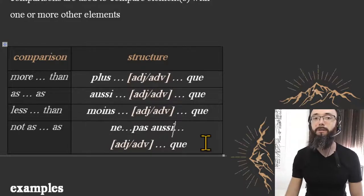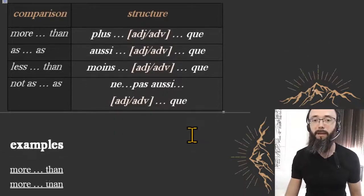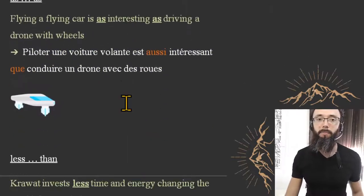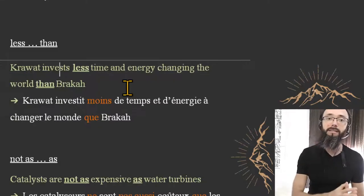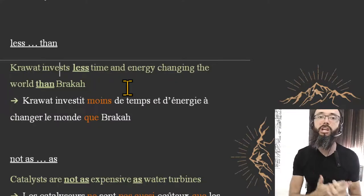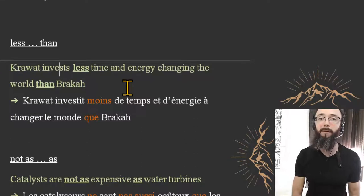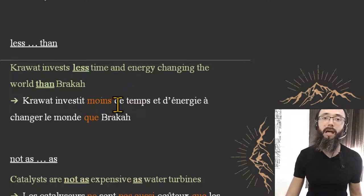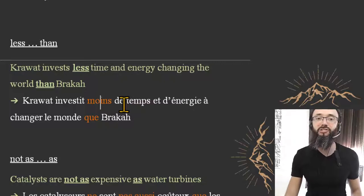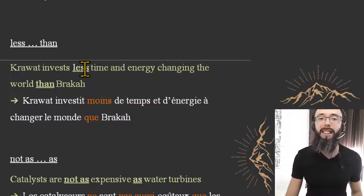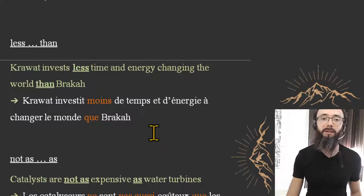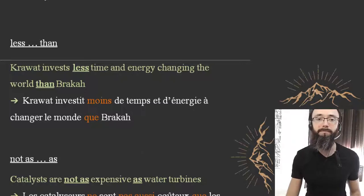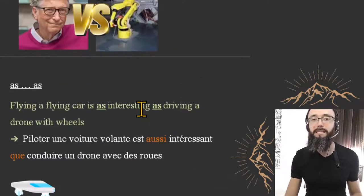'Less than' example: Kravat invests less time and energy changing the world than Braka — 'Kravat investit moins de temps et d'énergie à changer le monde que Braka.' Less than = 'moins que.' Clear as water, clear as crystal, clear as a bell — three easy ones.